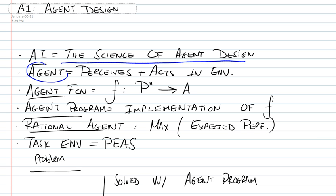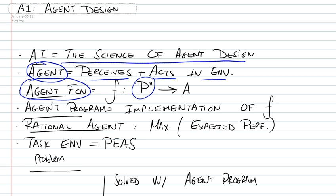So what is an agent? The agent we're going to be looking at is something that perceives and acts in a given environment. The agent will seek to implement an agent function — this is an abstract concept. It takes the history of percepts, so all the observations that the agent will be doing, and it produces an action.